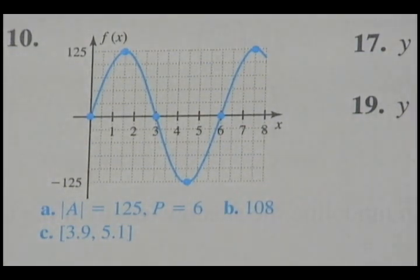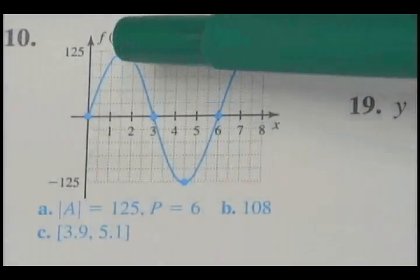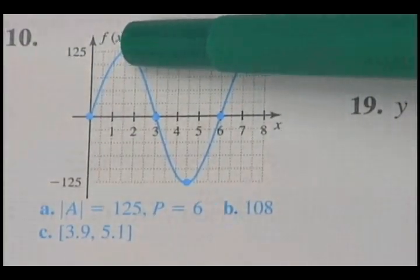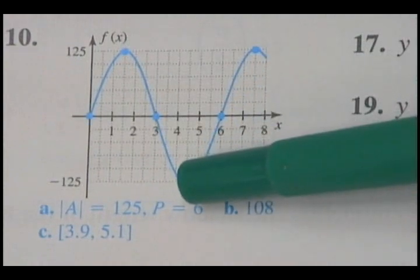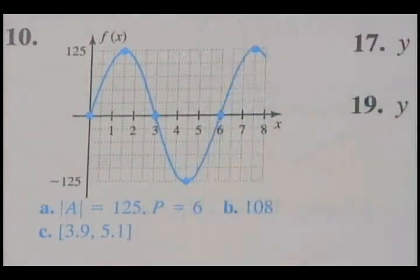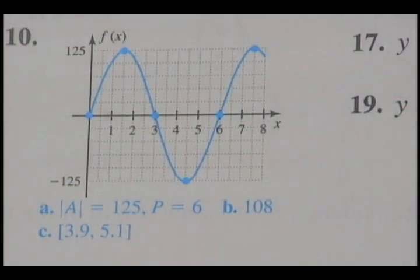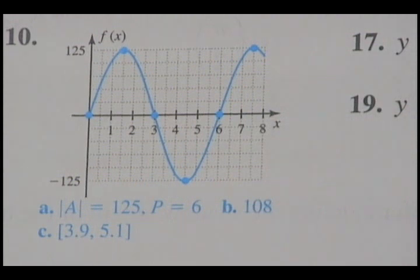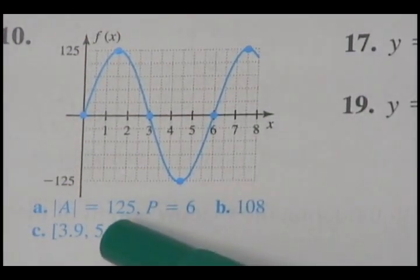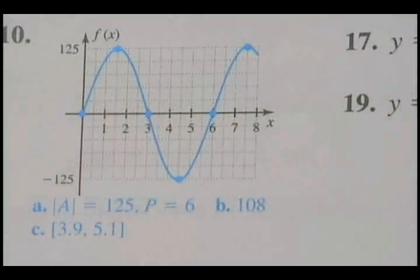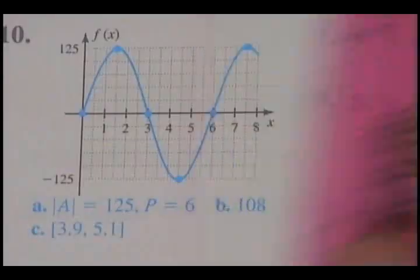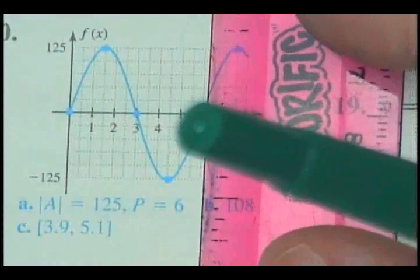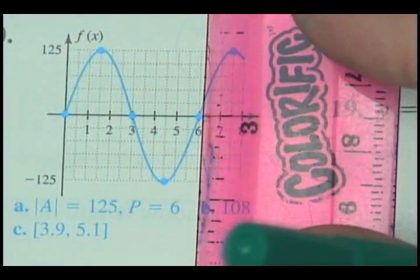To get my amplitude, I look at the height — it's at 125 — and what is the low? Negative 125. So you automatically know the amplitude has to be 125. If those numbers had been different, you'd subtract them and divide by 2. My amplitude is 125. Now for the period — one complete sine graph — that period right there is 6.